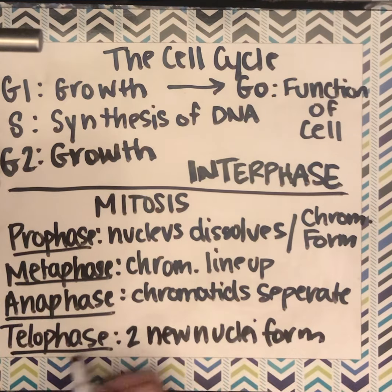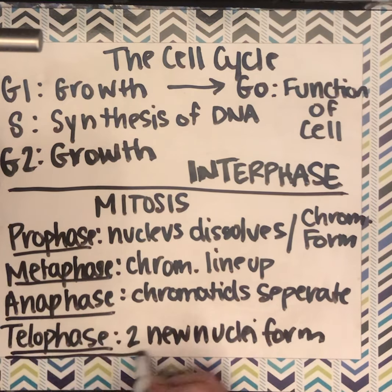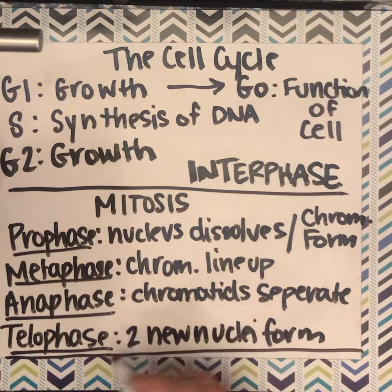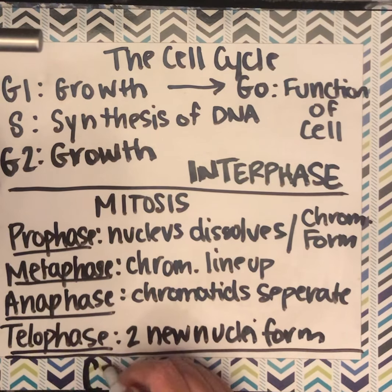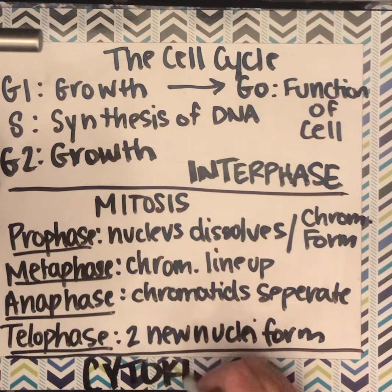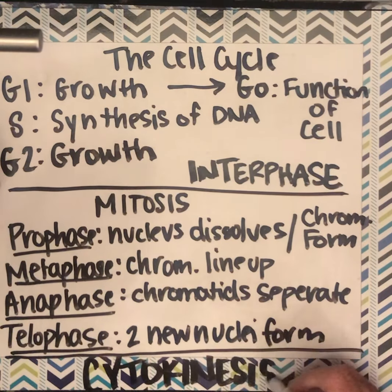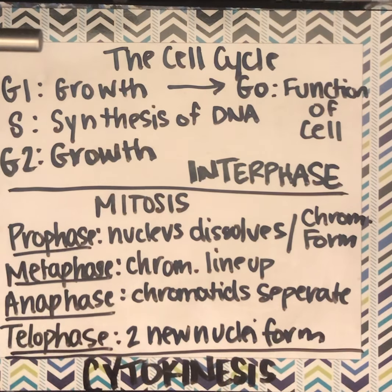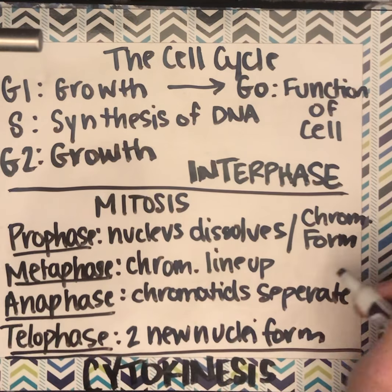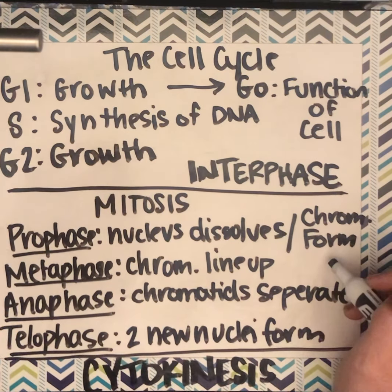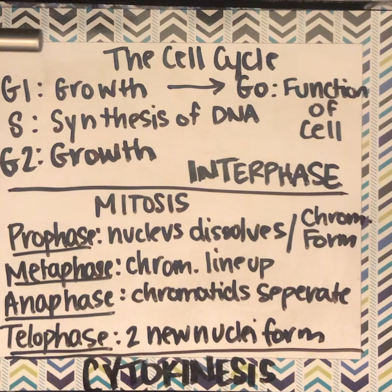The very last thing after mitosis is cytokinesis, and that is the division of the cytoplasm. So you've drawn it, you've seen it — that is the cell cycle.